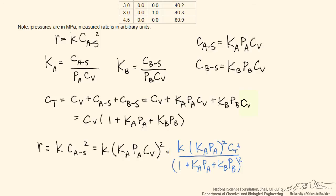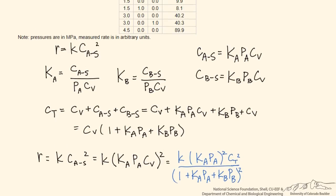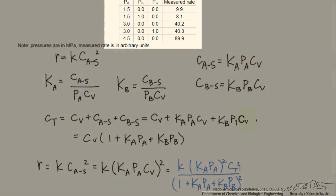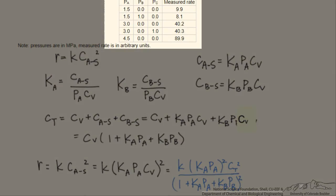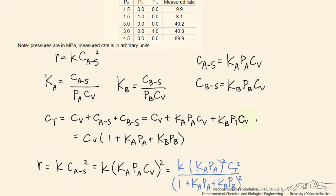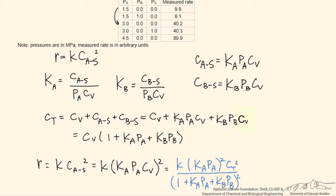Looking at the experimental data, we observe we can find points where the partial pressure of A, for example going from here to here, is doubled, or in this case tripled, while the partial pressures of B and C are kept at 0 for those three data points.